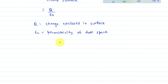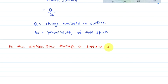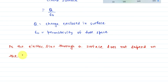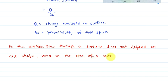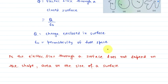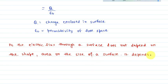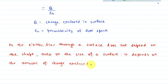The electric flux through a surface does not depend on the shape, area, or size of the surface. It depends only on the amount of charge enclosed within it.